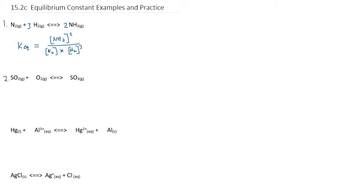Let's try another one. Number two has SO₂ gas plus oxygen gas to SO₃ gas — sulfur dioxide and sulfur trioxide. To balance this, we've got sulfur on both sides already, but we have one too many oxygens, so we could fix that by putting a half in front of the oxygen. We could double everything if we wanted to, but using the half exponent results in fewer exponents in our K equation. They're all gases, so we include them all. The concentration of products is SO₃ — no exponent needed — divided by SO₂ times O₂ raised to the power of one-half. An exponent of one-half is the same as square-rooting, and it works just like any other exponent.